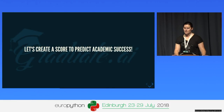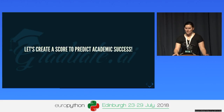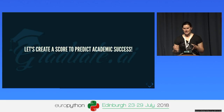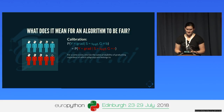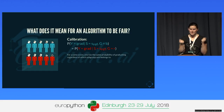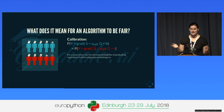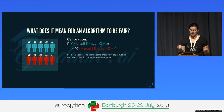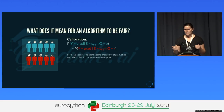Now that we've got some nice data, it's time for the machine learning part — we're going to learn a score to predict academic success, because grades alone aren't great. The first question is: what does it mean for an algorithm to be fair? The first answer is that it should be calibrated — if we have a certain reference score, the probability of graduating is the same for everybody regardless of which subgroup they belong to, whether that's male vs. female, ethnic subgroups, social class, or anything else.